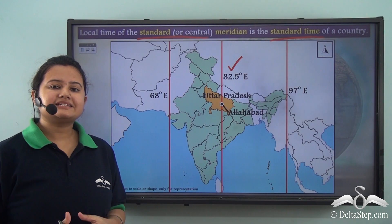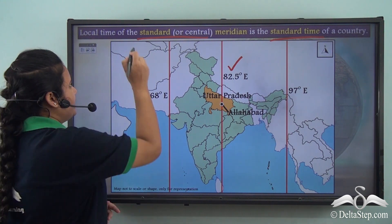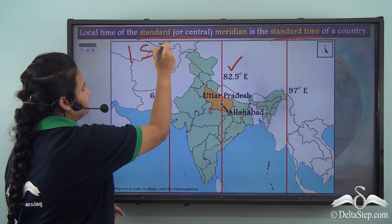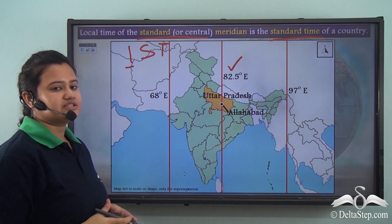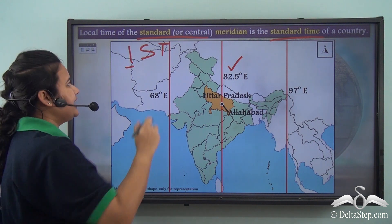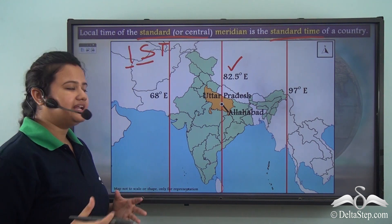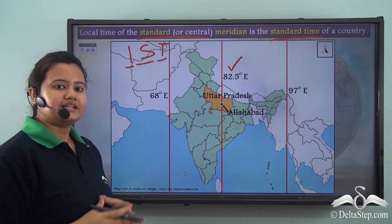The standard time of India is known as IST, where I stands for Indian, S stands for Standard, and T stands for Time.